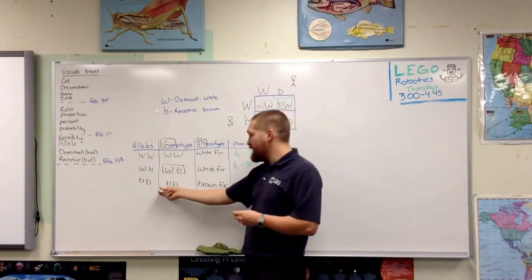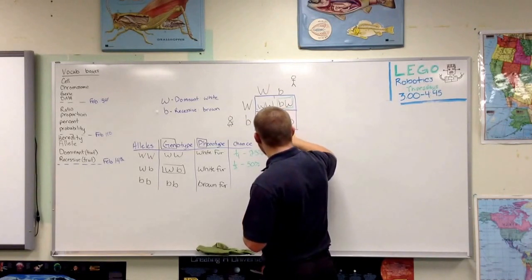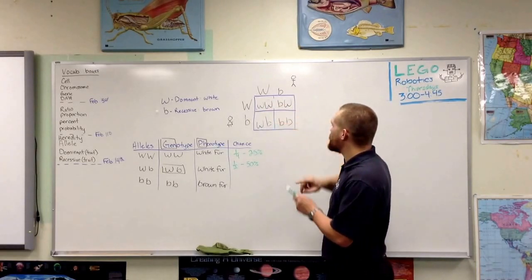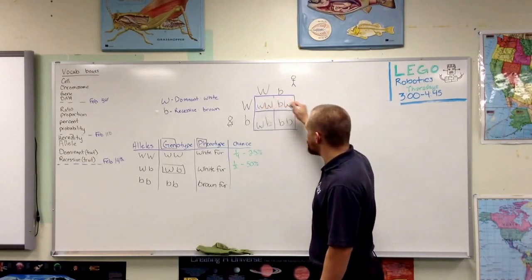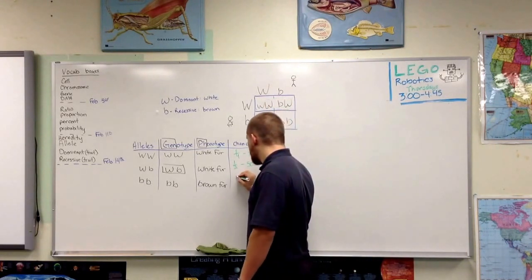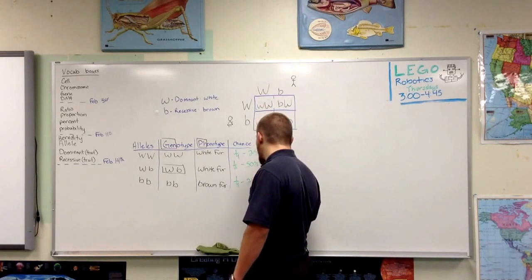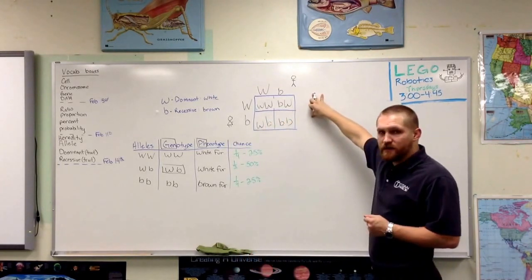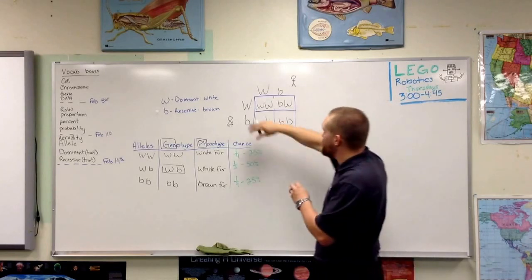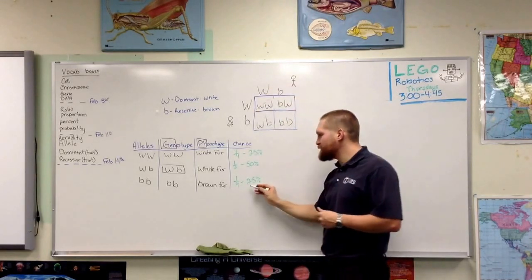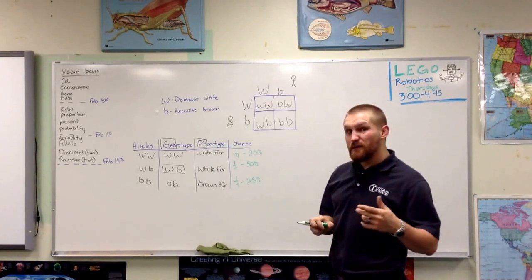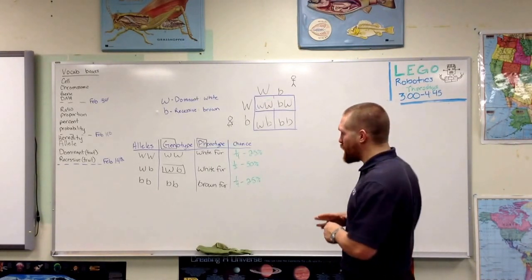What are the chances of having a recessive-recessive? I have a recessive-recessive right here. That's one out of four, so a 25% chance. We can say that these two parents have a 25% chance of having a brown-fur bunny, which could be beneficial or not, depending on where these bunnies live.